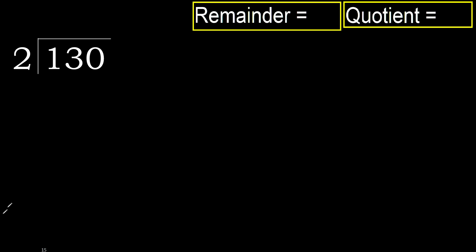130 divided by 2. 1 is less, therefore next. 13 is not less, therefore with 13.